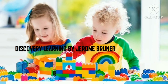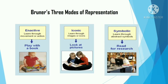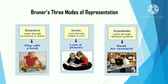Discovery Learning by Jerome Bruner: Bruner believed that learners construct their own knowledge. He suggests that with their current knowledge, learners can discover learning on their own even without help from a teacher. Bruner's three modes of representation are: Enactive — learning through movement or action (e.g., play with a book); Iconic — learning through images or icons (e.g., look at a picture); and Symbolic — learning through abstract symbols (e.g., read for research).